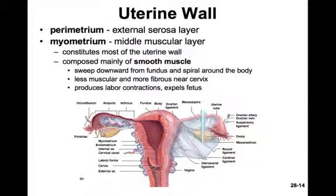The uterine wall is composed of three layers: the perimetrium, the myometrium, and the endometrium. The perimetrium is the external serosal layer. The myometrium is the muscular layer, constituting most of the uterine wall and containing mostly smooth muscle. These muscle fibers sweep down in a spiral fashion from the fundus towards the cervix. Its major function is to produce the contractions during labor that expel the fetus. The muscle fibers vary in length depending on the reproductive cycle — shorter around menstruation, longer at ovulation, and even longer after implantation — allowing the uterus to grow as the fetus develops.